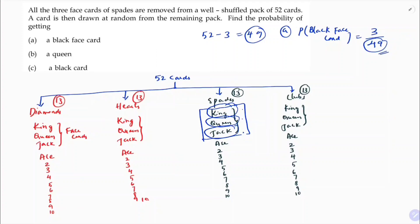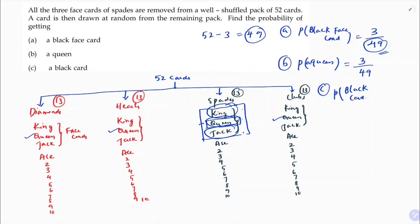Second question: what is the probability of getting a queen? Total cards are 49. For queens: originally there are 4 queens, but the queen of spades has been removed, so 3 queens remain. Therefore, the probability of getting a queen is 3/49.